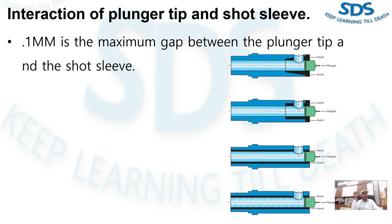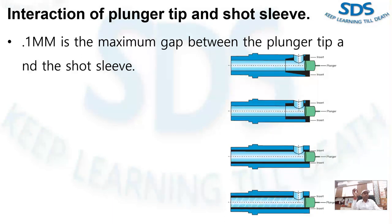If the gap becomes much less than point one mm, there is a danger of interference that will cause inconsistent short velocity. This gap will reset, so it is essential that a gap that is never more than point one mm be maintained at all times during the casting cycle.